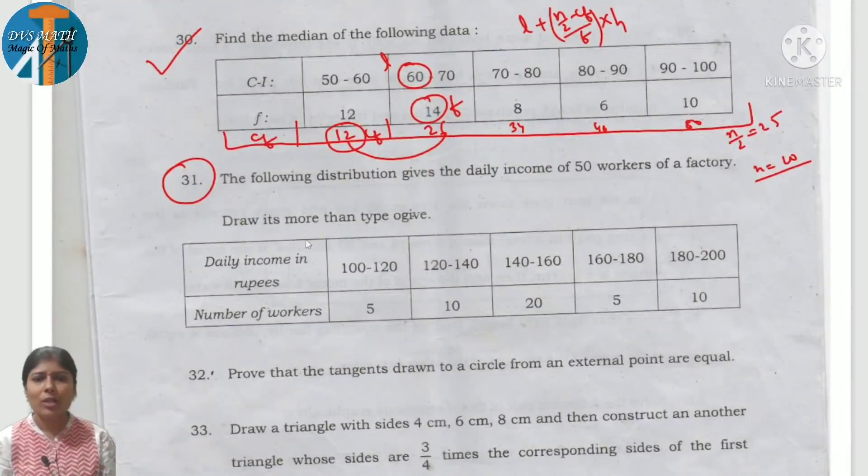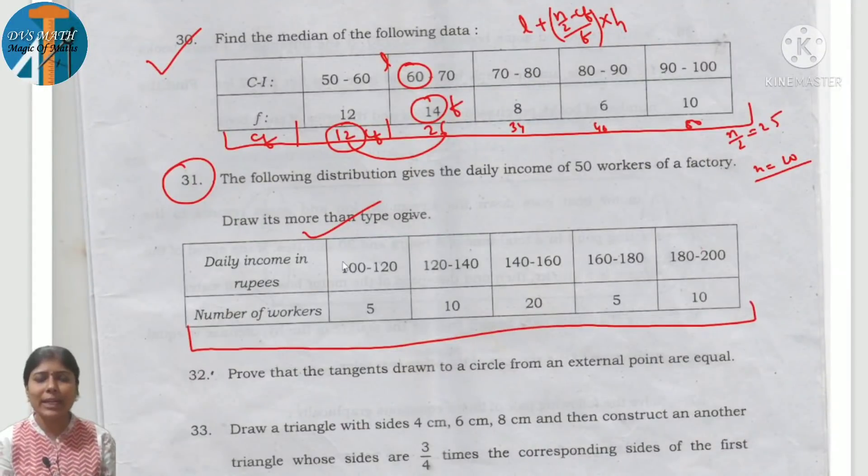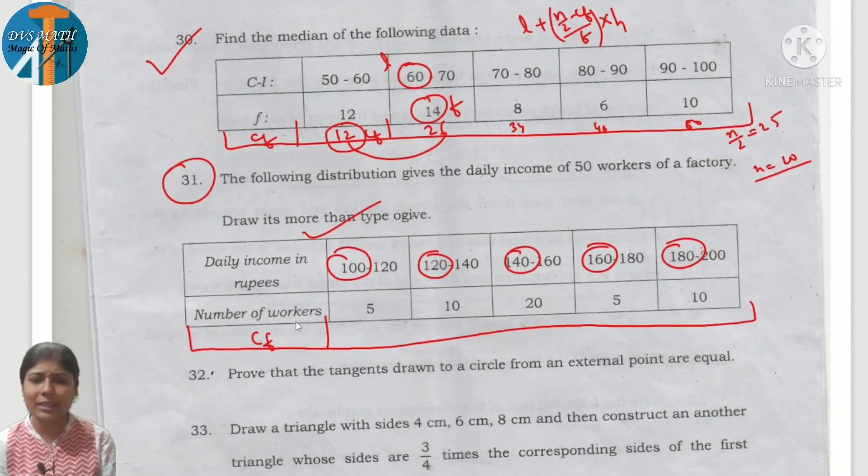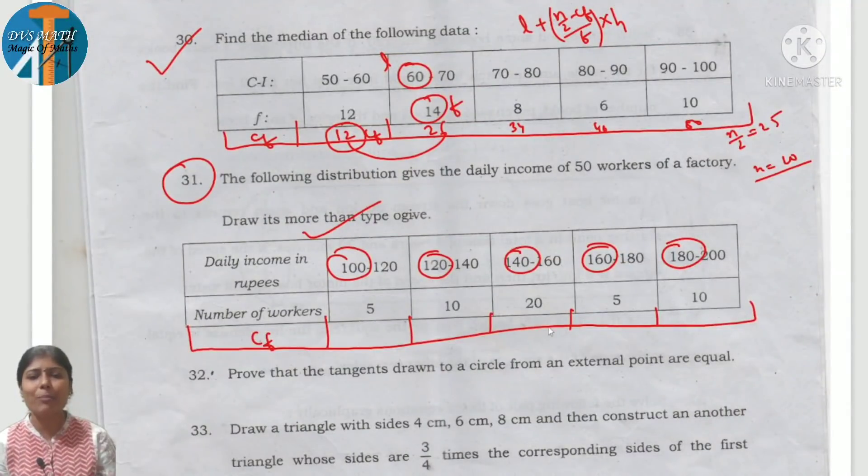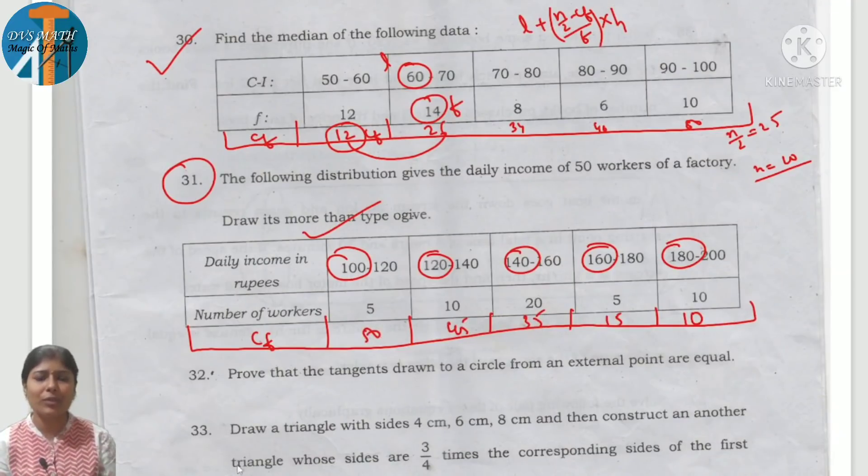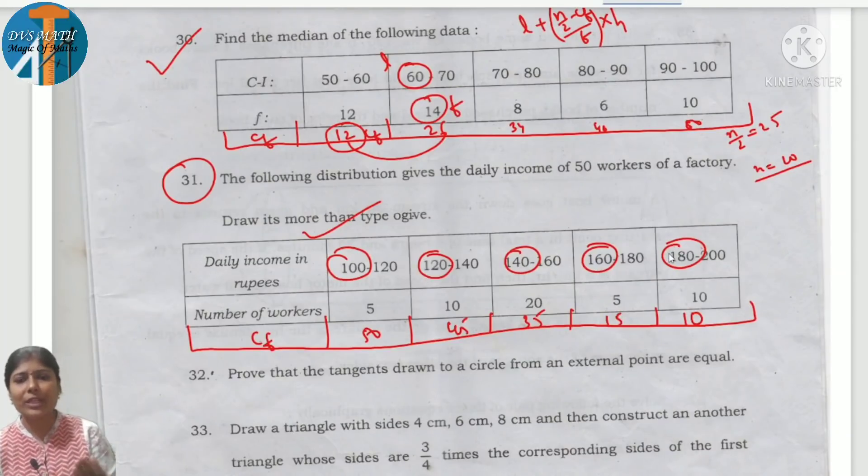Coming to 31st question: draw more than type ogive. You have more than type. You are going to take the lower limit. These are the lower limits. You have to find Cf. Cf should be in decreasing order. We are going to add from bottom. Bottom: 10, 10 plus 5 is 15, 15 plus 20 is 35, 35 plus 10 is 45, 45 plus 5 is 50. So 100, 120, 140, 160, 180. The graph will come.